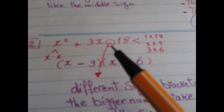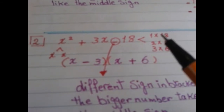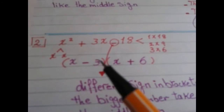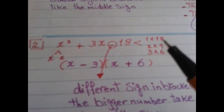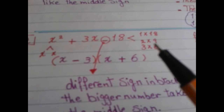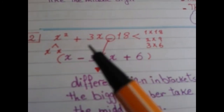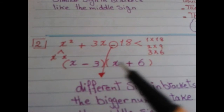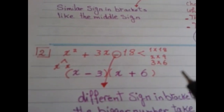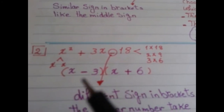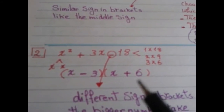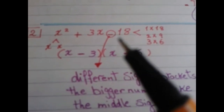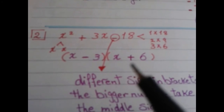The negative sign in front of the last term tells us to look at the difference between the two factors. We need a pair whose difference equals 3. Checking: 1 and 18 — difference is 17; 2 and 9 — difference is 7; 3 and 6 — difference is 3. So we choose 3 and 6. Write x and x in the brackets with 3 and 6. The negative last sign means different signs in the two brackets.